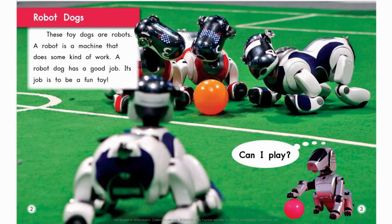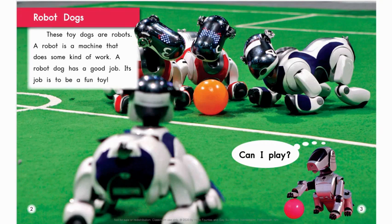On page two, when you read informational books, you can learn something new. You may see words that you don't understand — often the writer tells you what the word means. Read the first two sentences to yourself. Do you see the sentence that tells you what a robot is? It says, 'A robot is a machine that does some kind of work.'